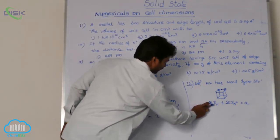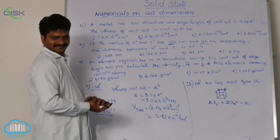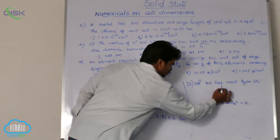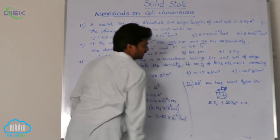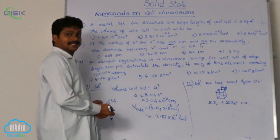Now, from this formula, what we can say? Here, asking for the distance between K plus and F minus. That means, between these two, what is the distance? That one we have to calculate. So, what is the formula for that? A by 2.